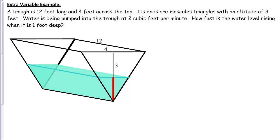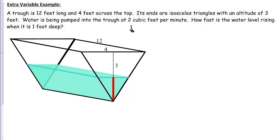Let's think about what quantities we're given and what we're looking for, and establish a variable on our picture. We're told water is being pumped into the trough at 2 cubic feet per minute — that's telling us about the volume. Then, how fast is the water level rising is asking us about the height of water in the trough. I'm going to call that height H. As more water is pumped in, that height is going to rise.